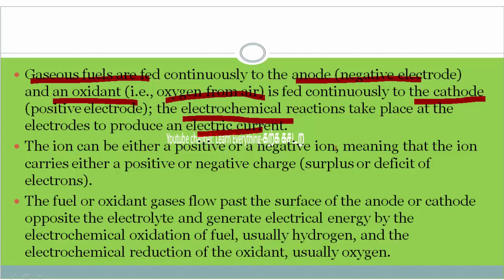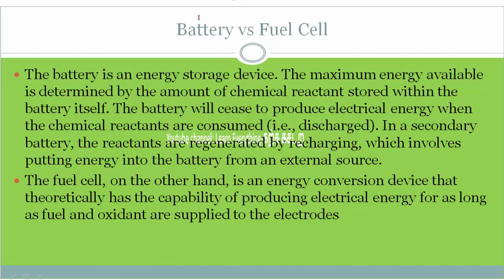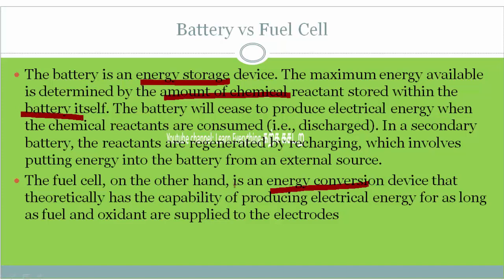The ion can either be positive or negative, meaning the ion carries either a positive or negative charge. The gaseous fuel is combined by means of transfer of ions, and electrons flow to the outside as output. You might have some confusion related to battery and fuel cell — a battery is an electrochemical energy storage device, whereas a fuel cell is an energy conversion device. The amount of energy in a battery depends on the chemical reactants stored within it.